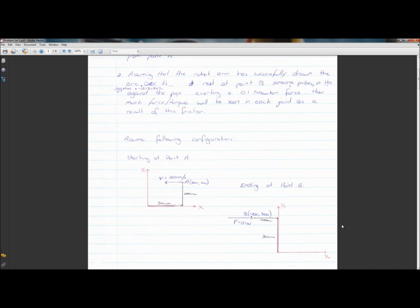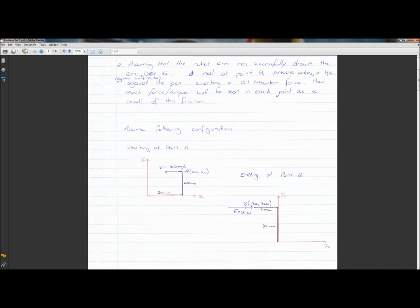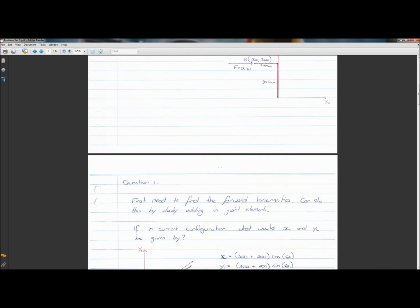And we must find the joint velocities required to move the pen tip from point A. And assuming that the robot arm has successfully drawn the arc. Now, this is kind of dodgy in the scanning. Once it's at rest at point B, someone pushes in the negative x direction against the pen, exerting a 0.1 newton force. How much force torque will be seen in each joint direction as a result of this friction? Actually, sorry, that should be, I know this question.